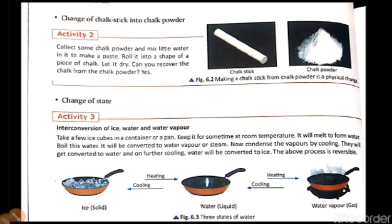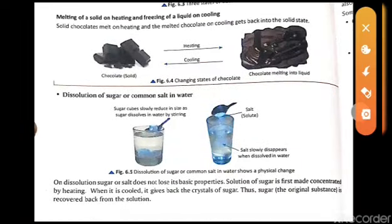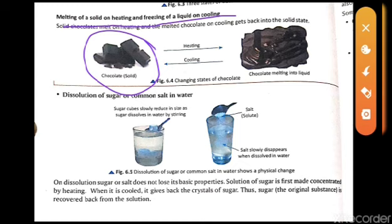Next is the melting of a solid on heating and the freezing of a liquid on cooling. For example, when we buy a chocolate and it gets heated in our pocket, the chocolate melts into liquid. Its shape is changing but its property is not changed — we still get the same taste, though the original shape we bought from the market is no longer there.